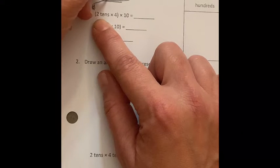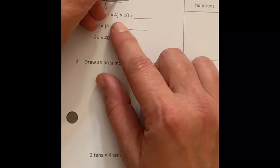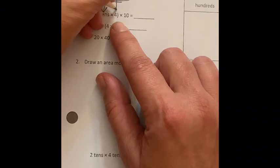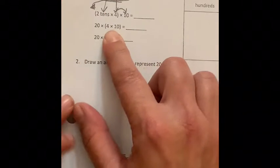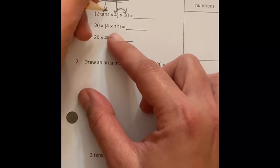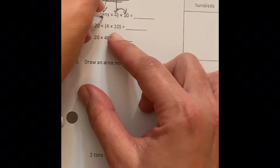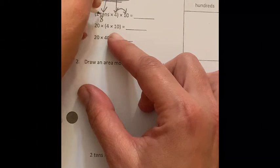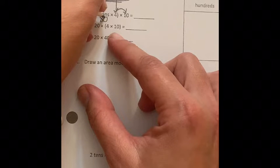Two tens, well that makes sense, times four. And so they took apart the 40 and they're thinking four and then times ten. Two tens times four. Well, I know that two times four is eight, and then it's actually two tens. So I'm going to say 80.